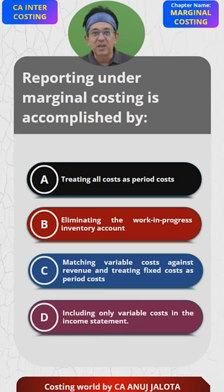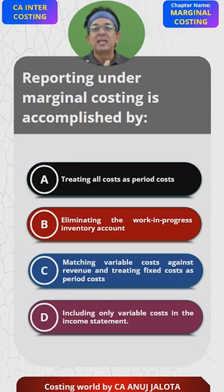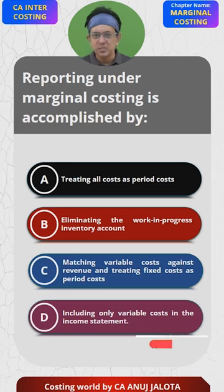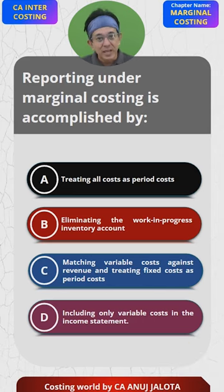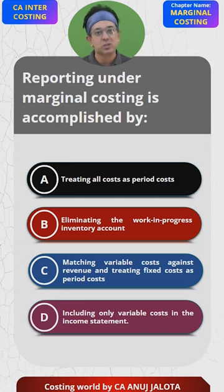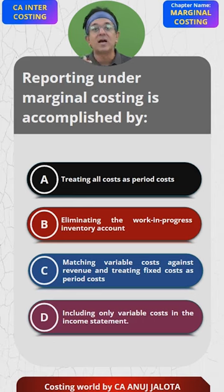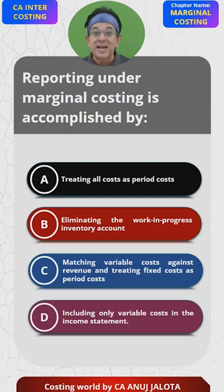Whenever you are doing marginal costing, against revenue there is one direct expense, and that is nothing but the variable cost. Your sales minus your variable cost gives you the concept of contribution. Contribution is dependent upon number of units, but against your contribution there is one period cost — which is the fixed cost. Fixed cost is not related to number of units, that is why it is not written against sales. So sales minus variable cost gives you contribution; less a period cost, that is fixed cost, which gives you profit.